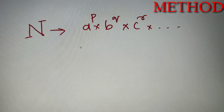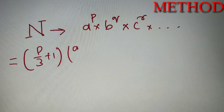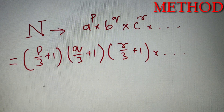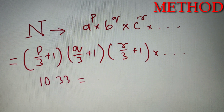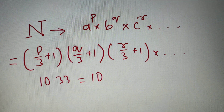Done with our first step of prime factorization, the second step is to simply put this value in the formula. The formula is equal to the integer value of (p divided by 3) plus 1, multiplied by the integer value of (q divided by 3) plus 1, multiplied by the integer value of (r divided by 3) plus 1, and so on till the last prime factor. When I say the integer value, I mean if the value under the bracket is 10.33, we will only take 10 and not 10.33. With these two simple steps we can calculate the number of perfect cube factors for any given number n.